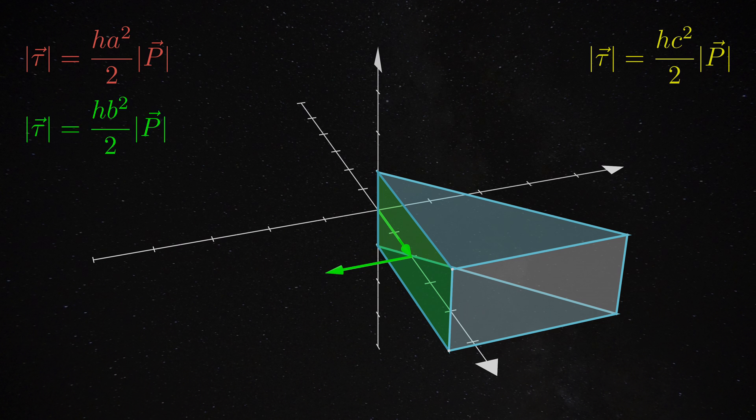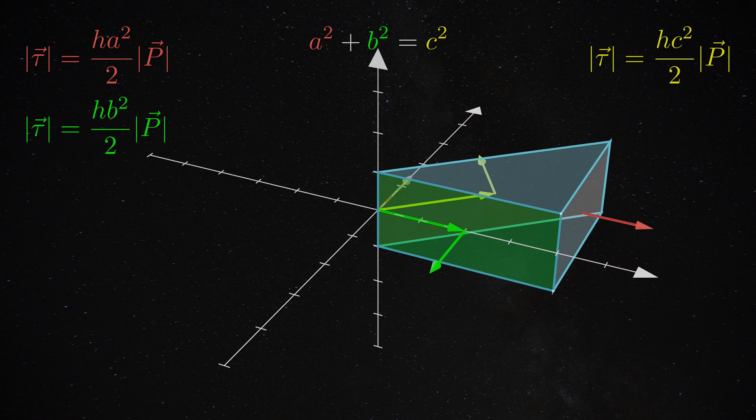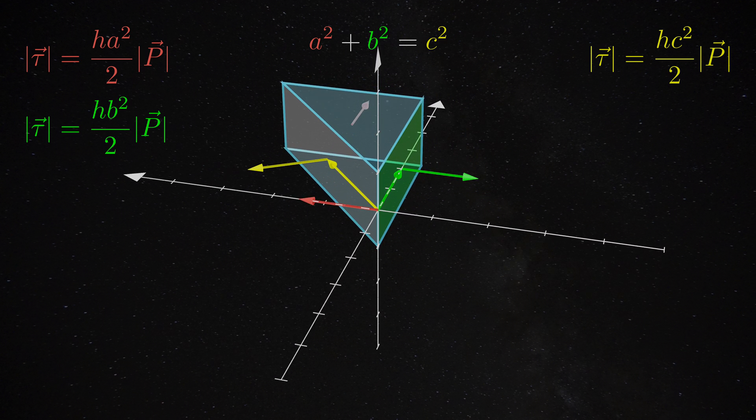In order for the container to remain at rest, Newton's first law says the three torques must cancel each other, so we recover the Pythagorean theorem. A square plus B square equals C square. And this is how you prove the Pythagorean theorem using the physics laws. Thank you for watching.